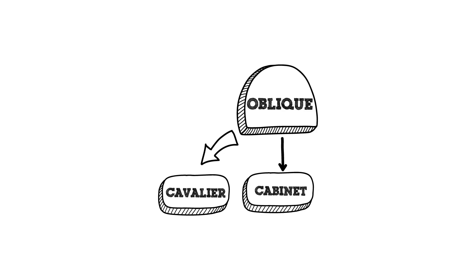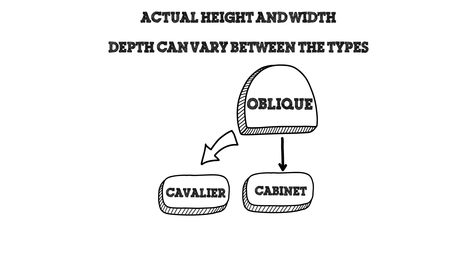Oblique drawings do have two different subsets. They have cavalier and cabinet. Generally, these drawings are drawn with true height and width, but the depths can vary. On a cavalier drawing, the depth is true, and the image looks a little bit distorted. On a cabinet drawing, the depth is halved, and what this does is allow the object to look a little bit more realistic to what it actually is.